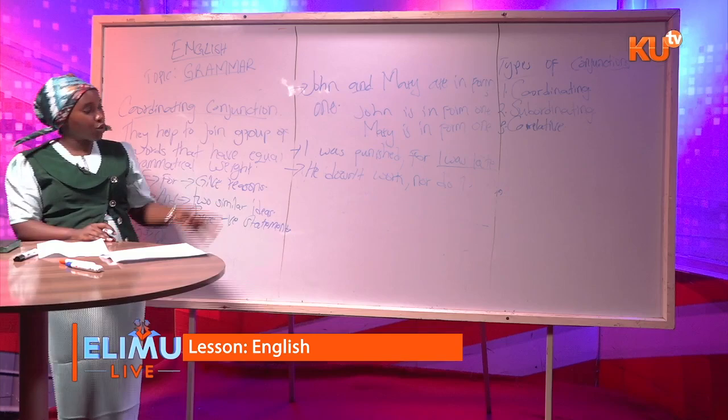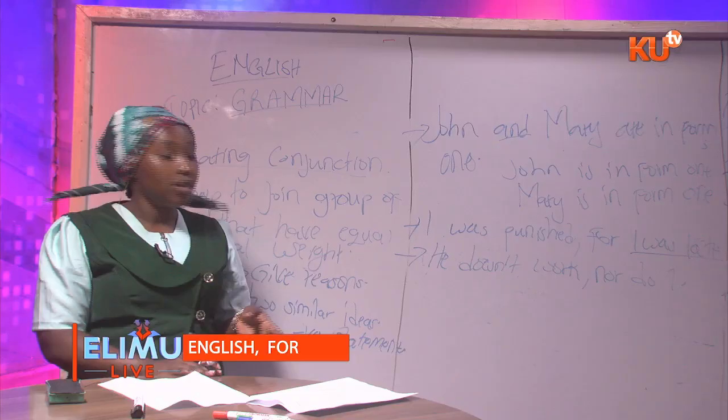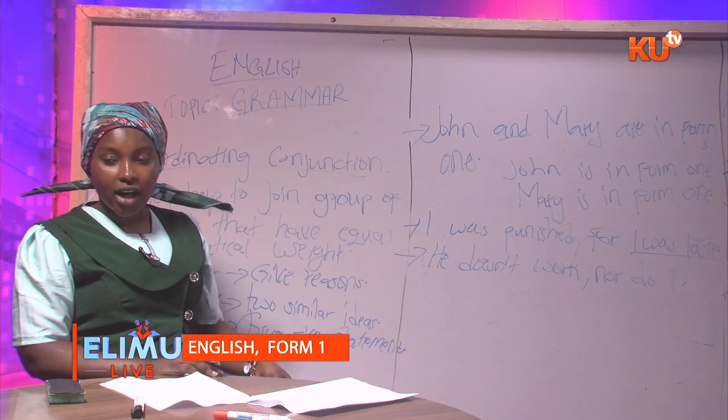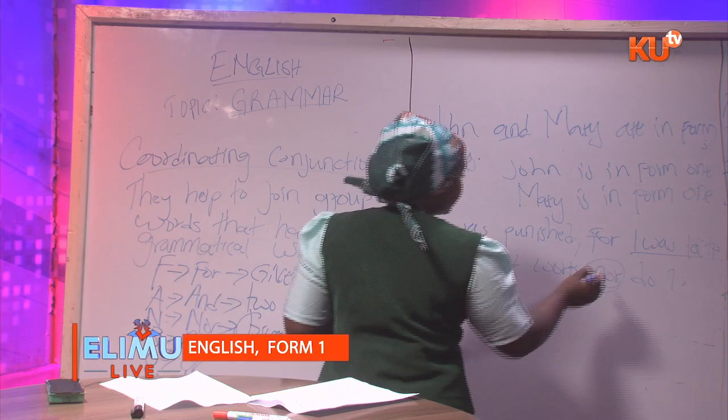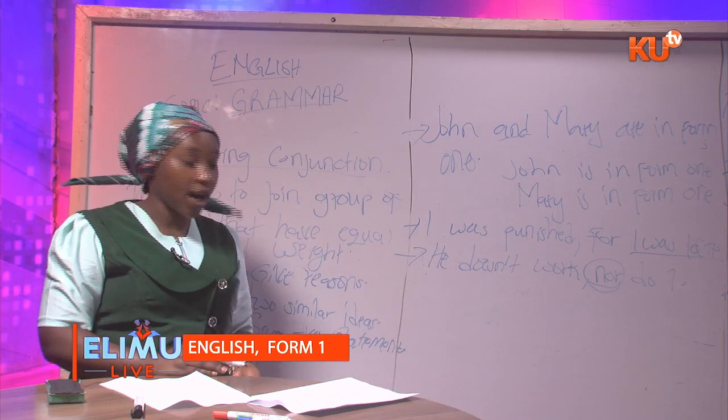Instead of having two sentences — 'I do not work' and 'he doesn't work' — I join the two using the coordinating conjunction 'nor' to bring out the negative statements. This gives us the sentence: 'He doesn't work, nor do I.'